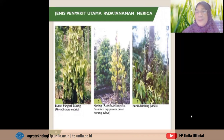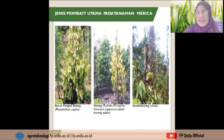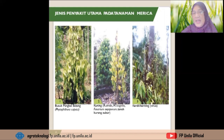Jenis penyakit utama pada tanaman merica: pertama, busuk pangkal batang yang disebabkan oleh jamur Phytophthora capsici. Kedua, penyakit kuning yang disebabkan oleh interaksi nematoda Radopholus similis dan Meloidogyne incognita, serta jamur Fusarium oxysporum pada tanah yang kurang subur. Ketiga, penyakit kerdil atau keriting yang disebabkan oleh virus.